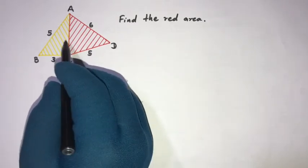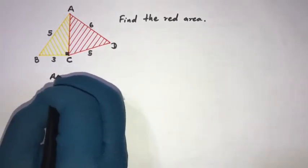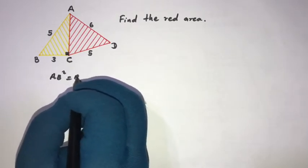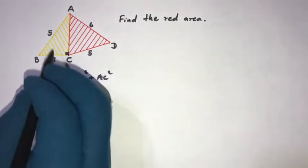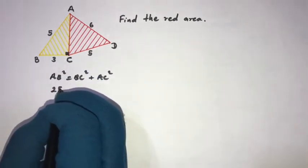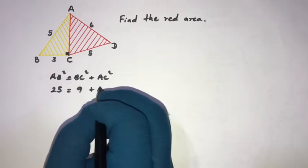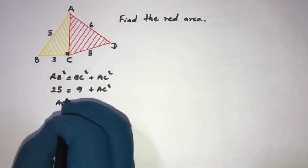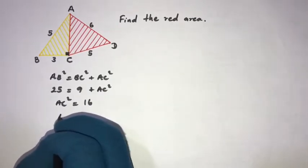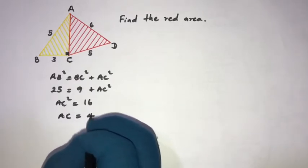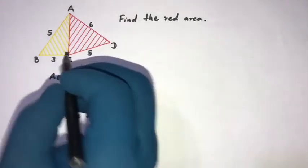According to the Pythagorean theorem, we know BC is 3 and AB is 4. If we apply the Pythagorean theorem, AB squared equals BC squared plus AC squared. So AB is 5, giving us 25 equals 9 plus AC squared. Therefore AC squared equals 16, so AC equals 4.